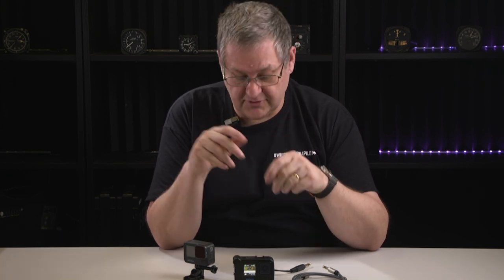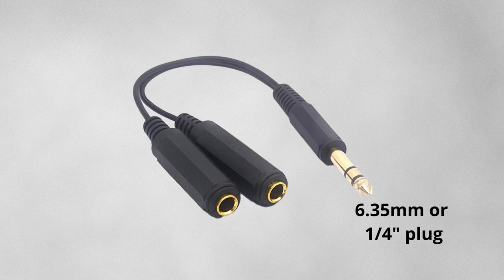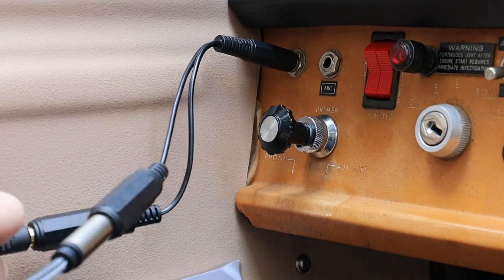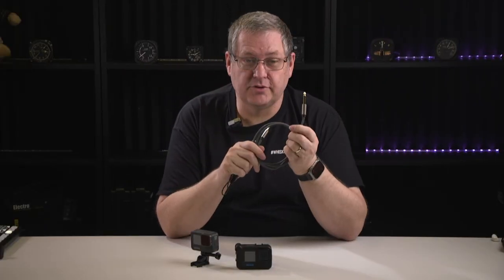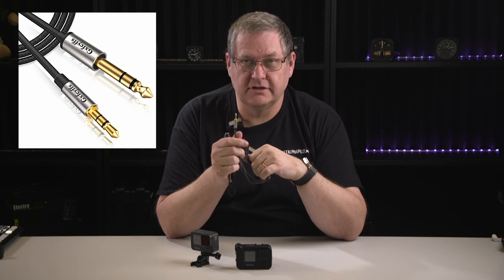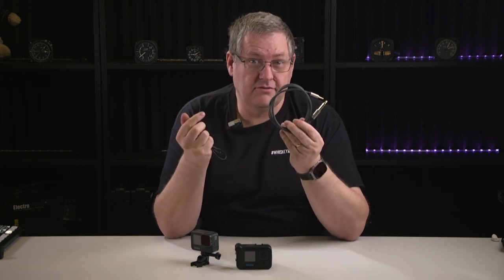Now, before I go any further, there are companies out there that are going to sell you an expensive set of aviation cables to allow you to connect to your aircraft. The simple answer is you don't need them. You need two very simple items. You need a headphone adapter — this is a 6.35 millimeter or quarter-inch stereo jack socket on one end with two sockets on the other end. The cable you need has a 6.35 millimeter jack socket on one end and a 3.5 millimeter plug on the other end that plugs into the GoPro. Both of these you can buy off Amazon for a few pounds or, if you're in America, a few dollars.